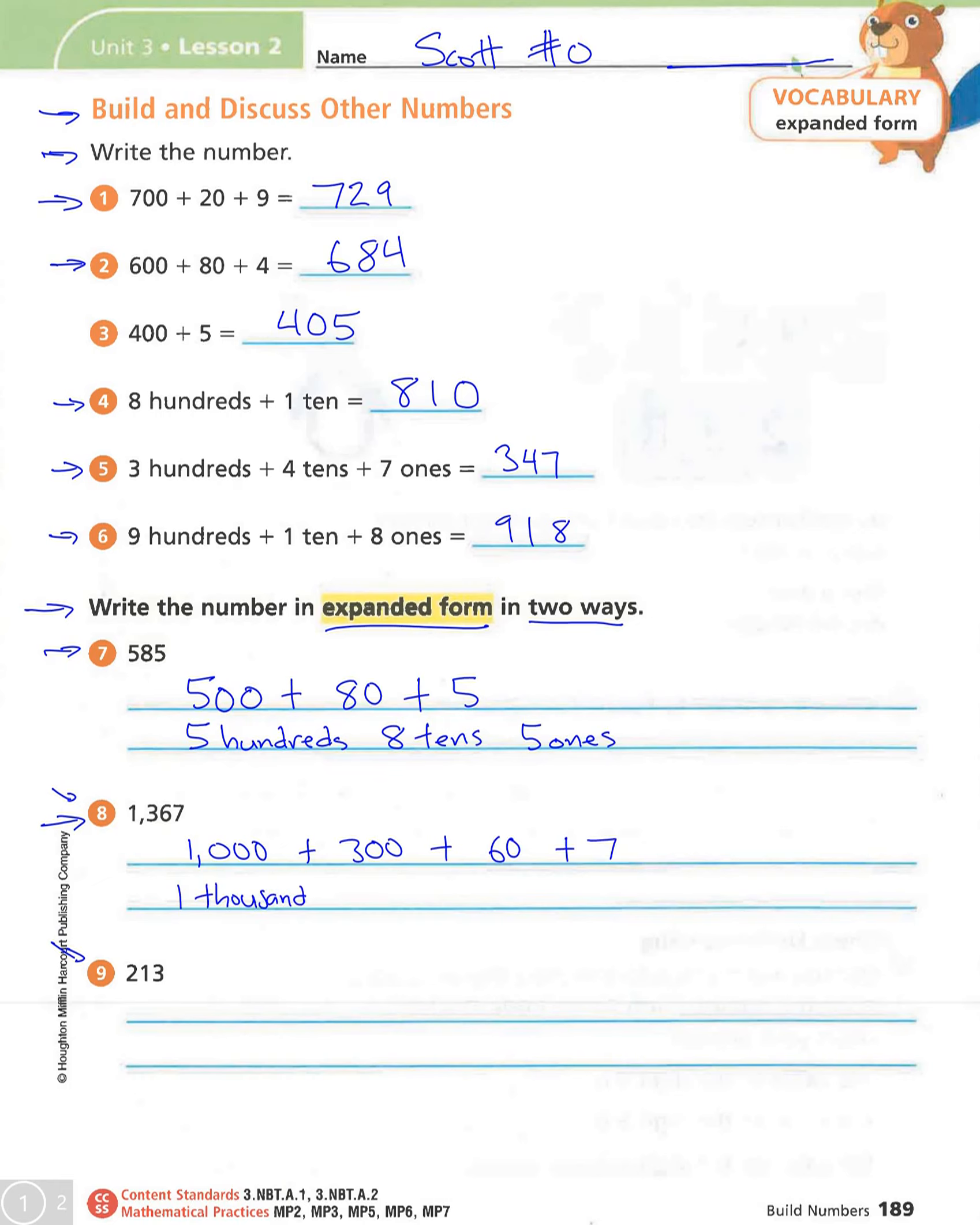We have 3 hundreds, 6 tens, and 7 ones. Alright.